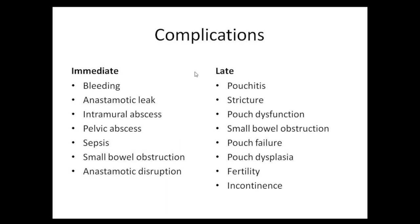Regarding rectal dissection technique: in the background of malignancy, oncological principles apply including neoadjuvant chemoradiation and dissection in the prescribed TME plane. If there is no underlying malignancy, dissection is kept close to the rectum to prevent neurological damage. Any malignancy developing in the background of ulcerative colitis — whether colonic or rectal — must be treated according to oncological principles, with resection up to the base-ligated vessels.